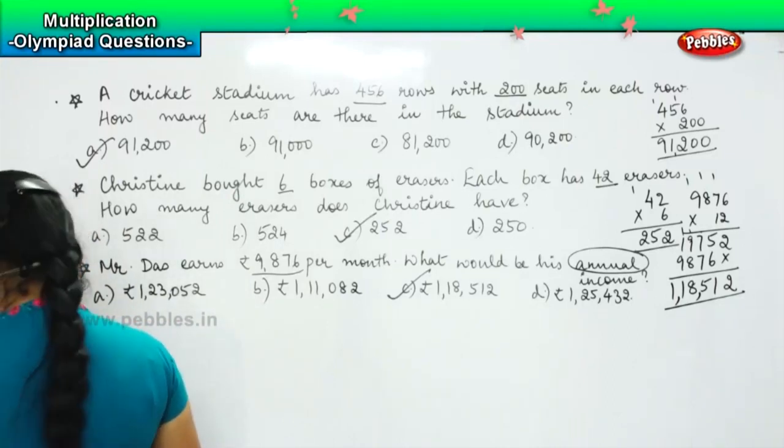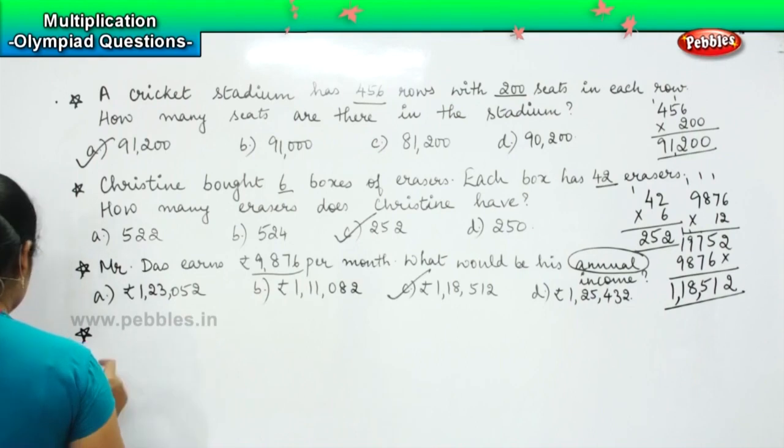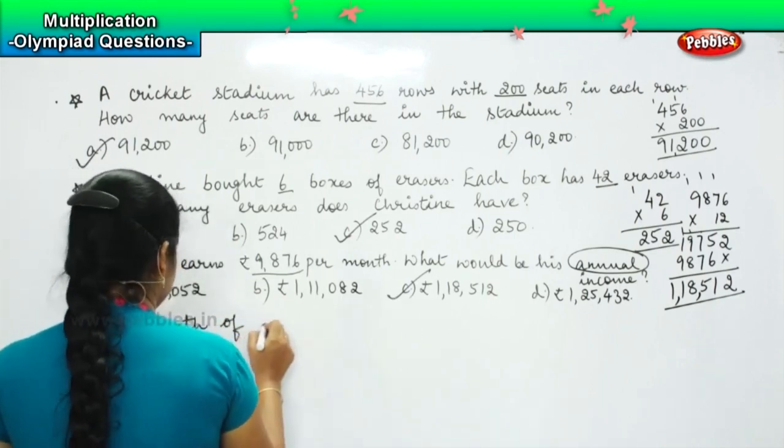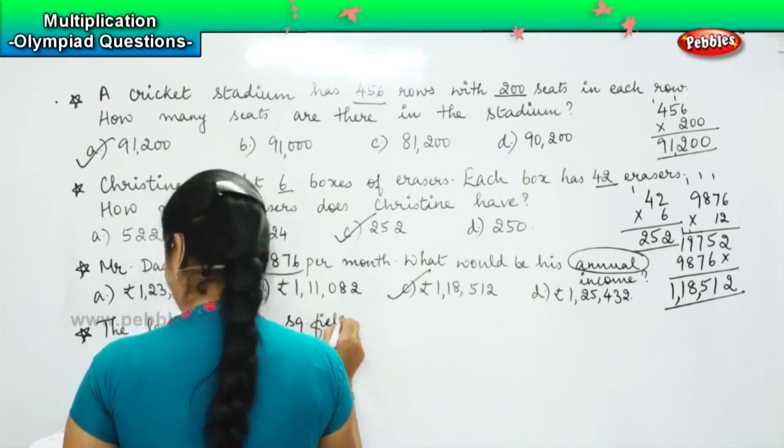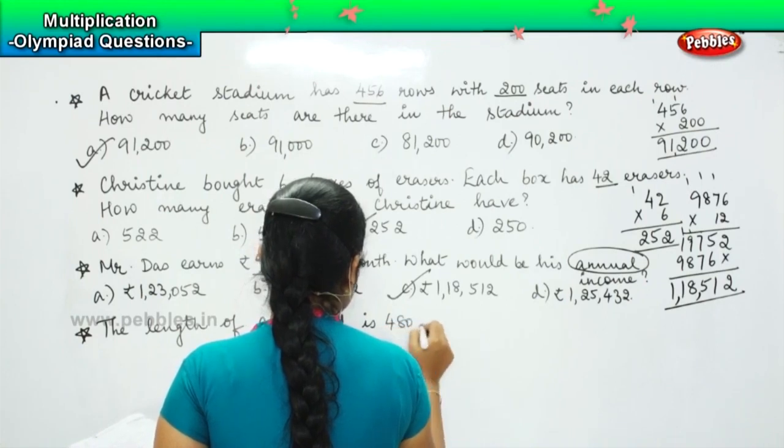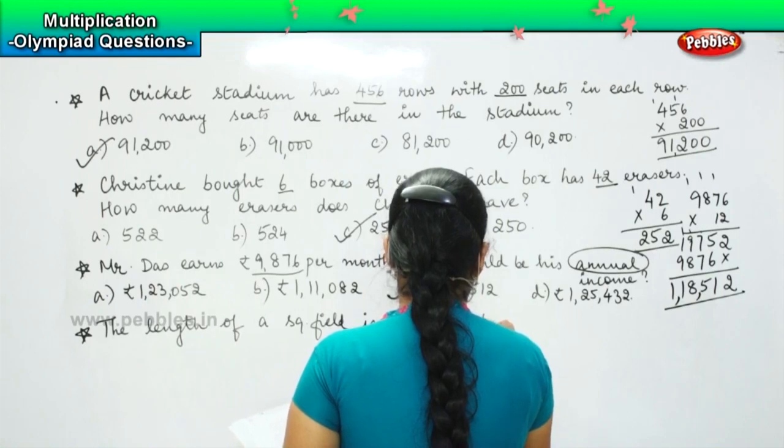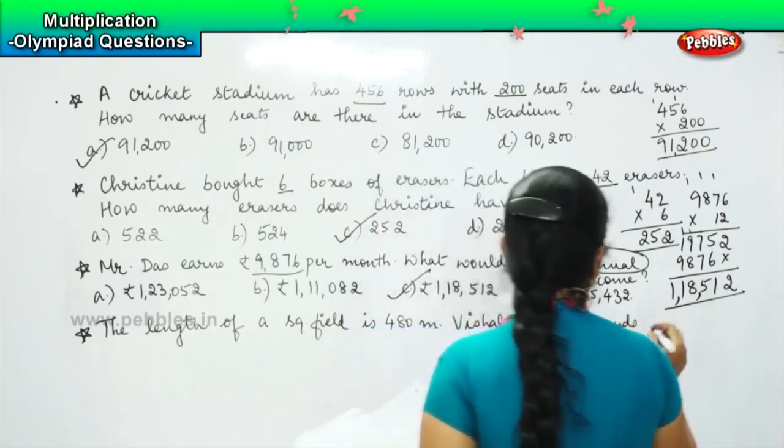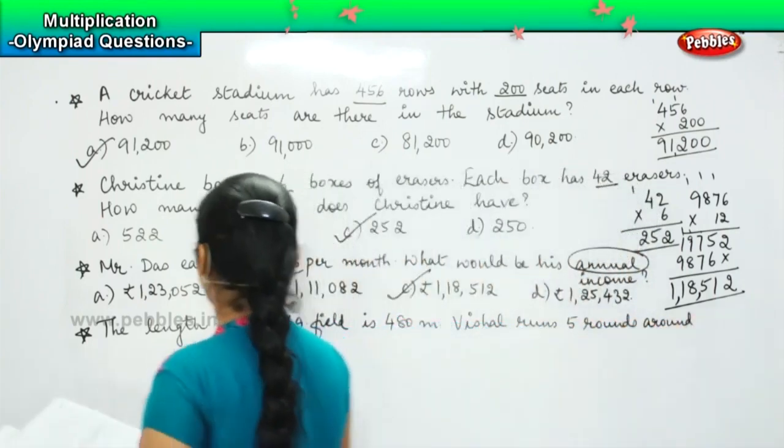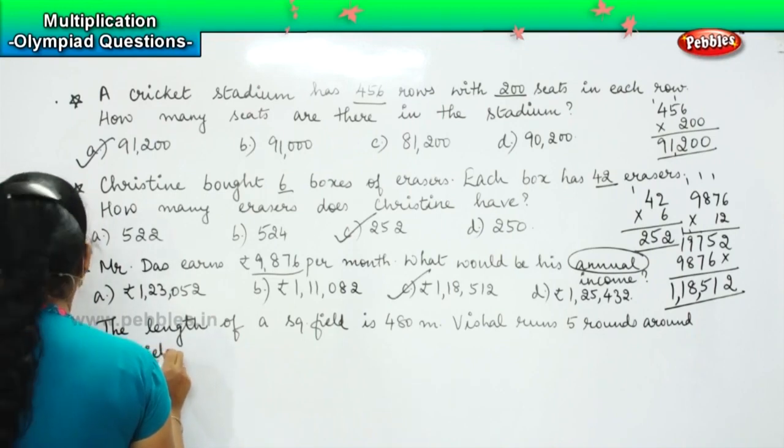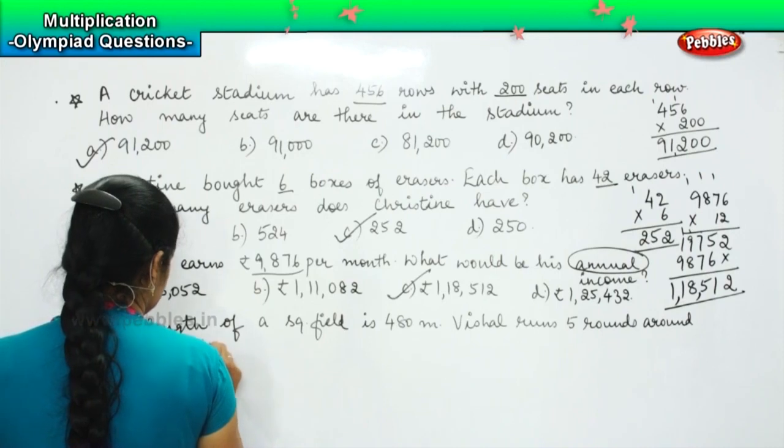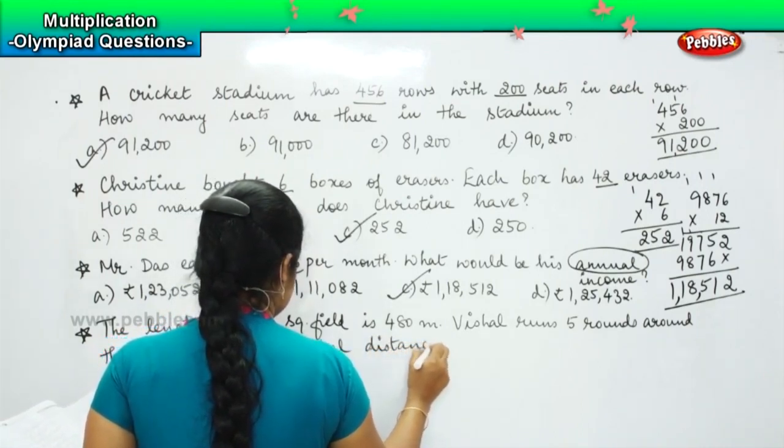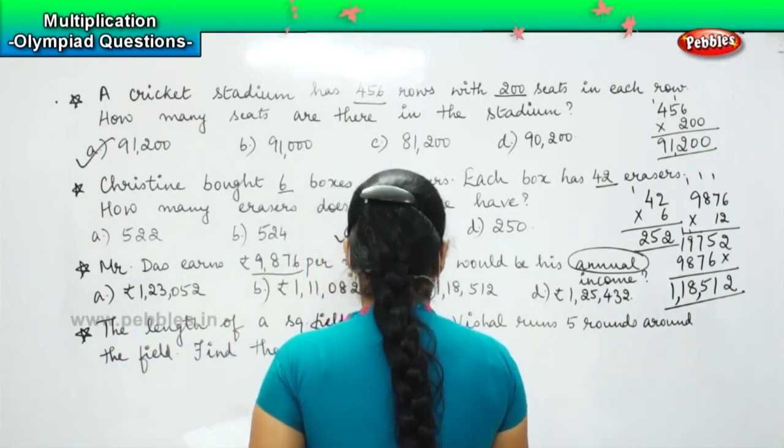Here is your next question. The question says: the length of a square field is 480 meters. Vishal runs 5 rounds around the field. Find the total distance ran by Vishal.